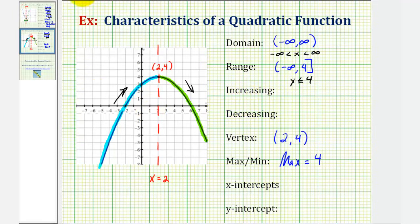So on the open interval from negative infinity to two, the function is increasing. And on the open interval from two to infinity, the function is decreasing. So using interval notation, we would say it's increasing on the open interval from negative infinity to two, or we could say when x is less than two. And it's decreasing on the open interval from two to infinity, or we could say when x is greater than two.